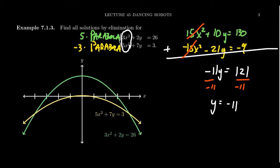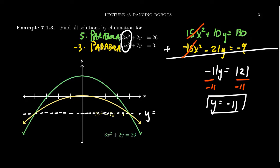121 is 11², so we end up with y = -11. You'll notice we only got one y-coordinate, and when you look at the graph, that kind of makes sense — the two points of intersection actually live on the same horizontal line, y = -11.